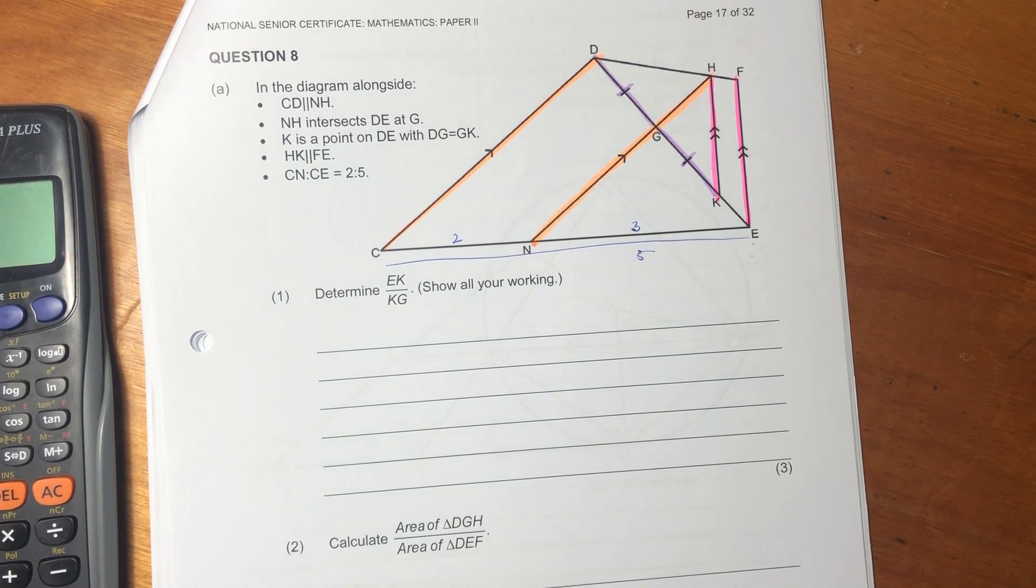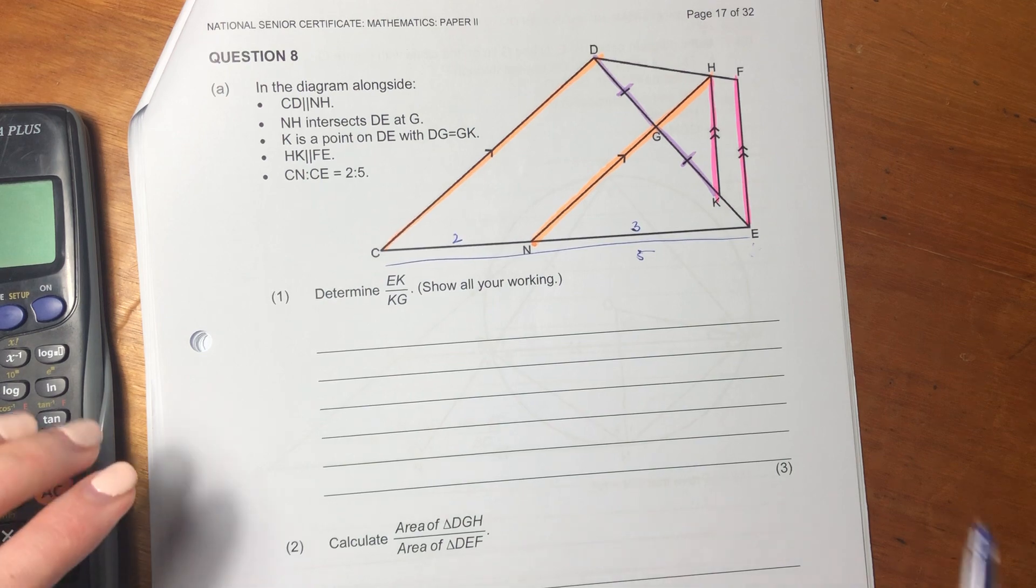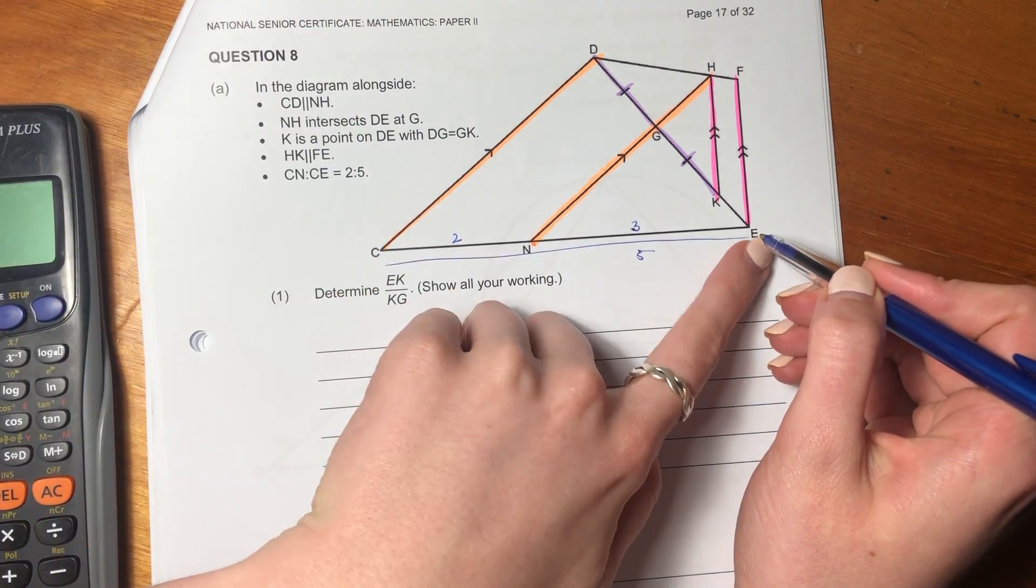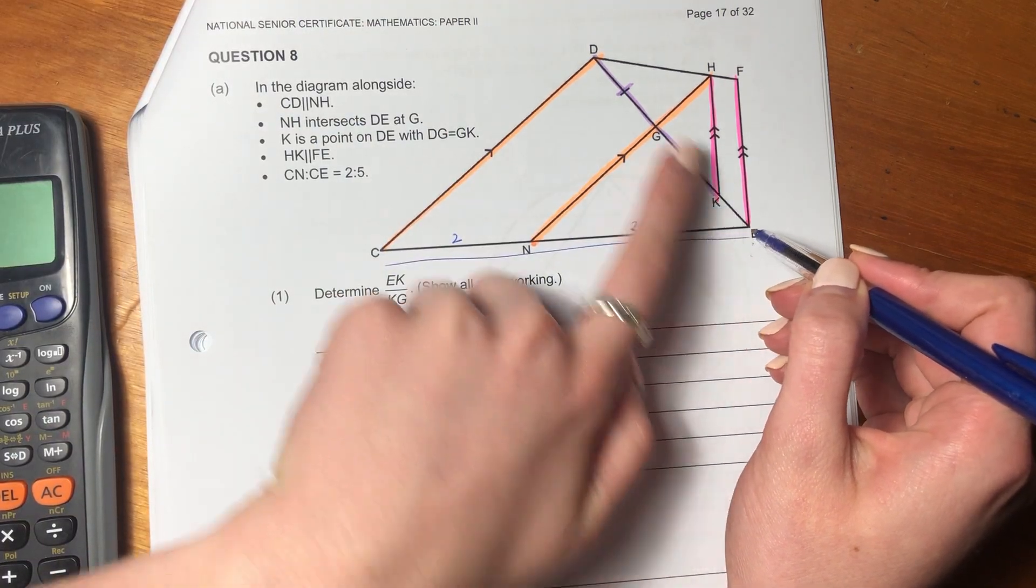Then it says, determine EK over KG. So let's look where EK is. So EK is here, and then we have KG.